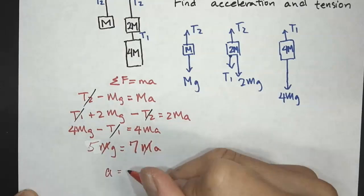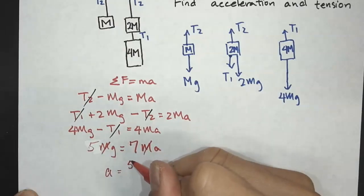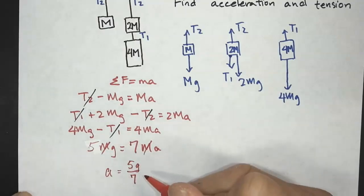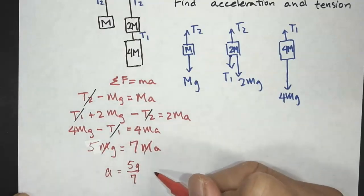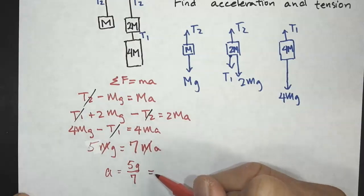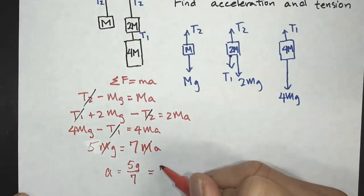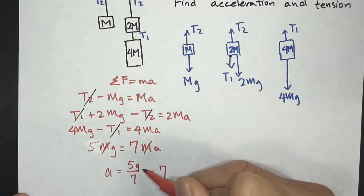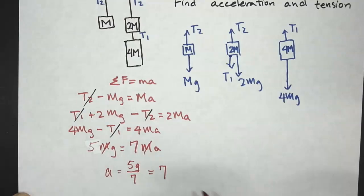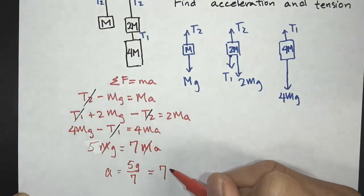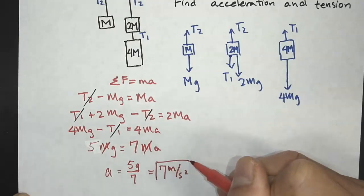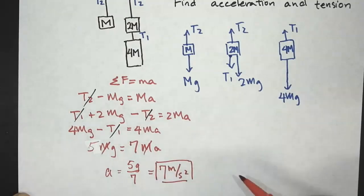Dividing both sides by 7, A equals 5g over 7. With g = 9.8, we get approximately 7 meters per second squared. So that is the acceleration.